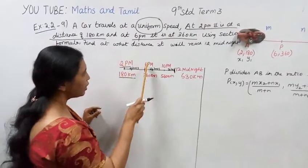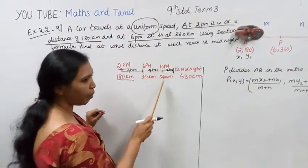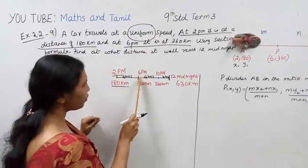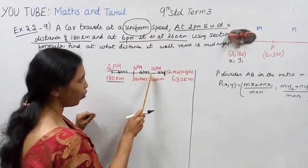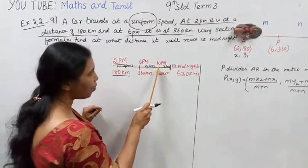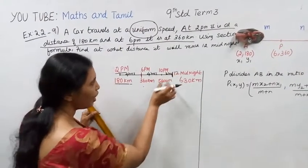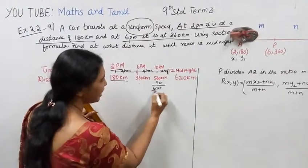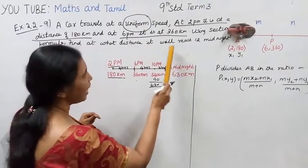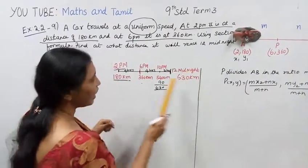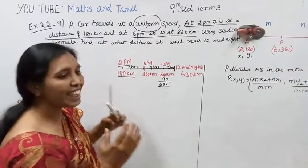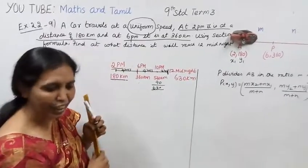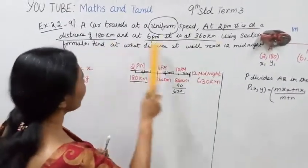At 2pm, 180 km. At 6pm, 360 km. At 12 midnight the distance will be 630 kilometers. That's the answer. Now let me show you the calculation using section formula to get 100% marks.